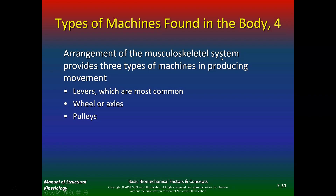The arrangement of the musculoskeletal system provides three types of machines in producing movement: levers, which are the most common, wheels or axes, and pulleys. The human body is essentially just levers, wheels, and pulleys.